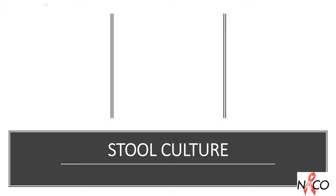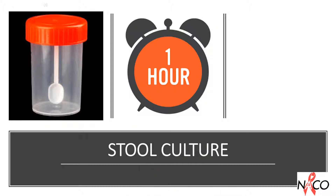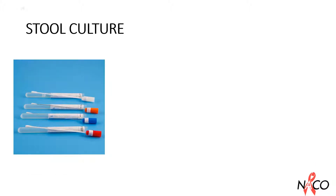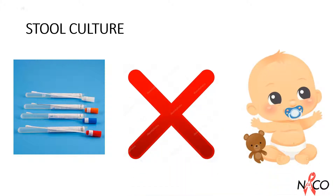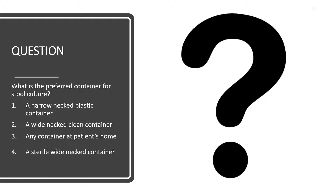Procedure for stool culture: collect the specimen directly into a clean, dry, sterile, leak-proof, wide mouth container. Transport to the microbiology lab within one hour of collection, or transfer in a medium like Cary-Blair or any other appropriate transport medium. Swabs for routine pathogens like parasites, toxins or viral antigens are not recommended except in infants. Quick question: what is the preferred container for stool culture? The answer is a sterile wide-mouthed container.